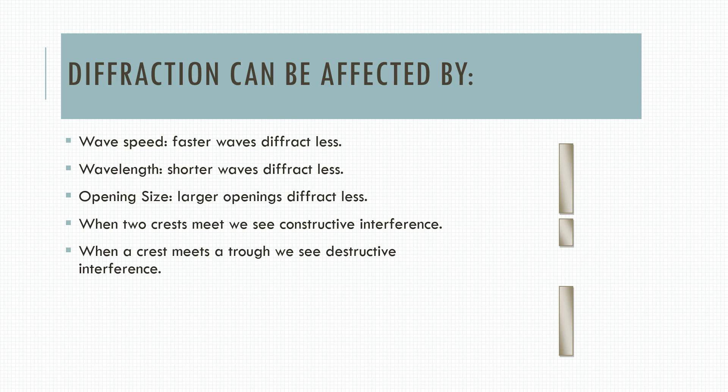Diffraction can be affected by different things. They're affected by the speed. The faster the waves go, the less that they get bent, the less they diffract. The shorter the wavelength, the less that they will diffract, which kind of makes sense, because if you picture our ocean waves, the faster that they're going, or the closer they are together, that's shorter wavelength. The larger the opening size, the less they diffract. The smaller the opening size, the more that they are going to bend.